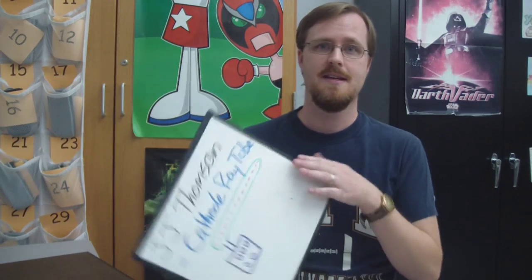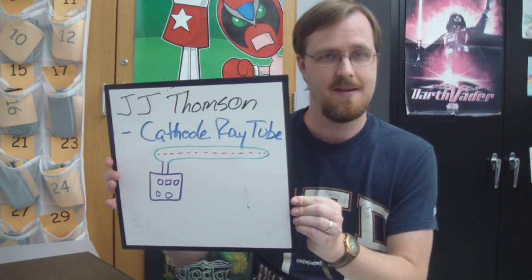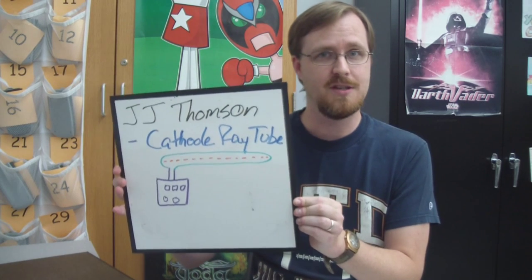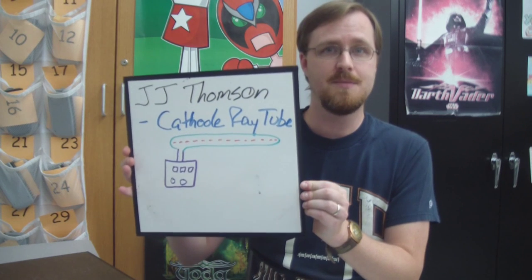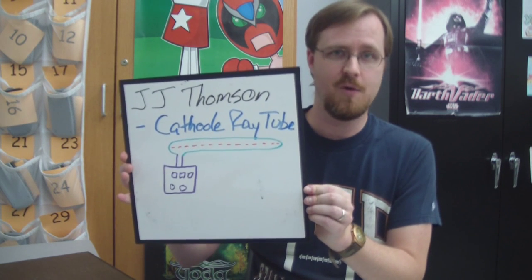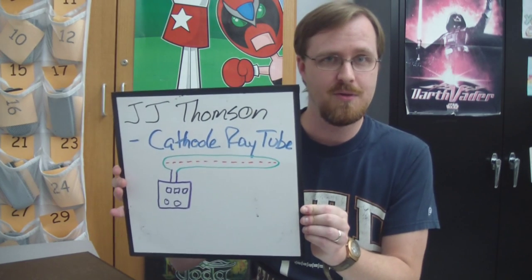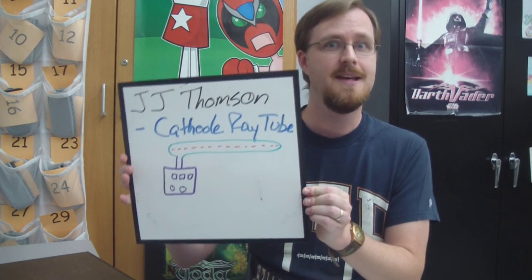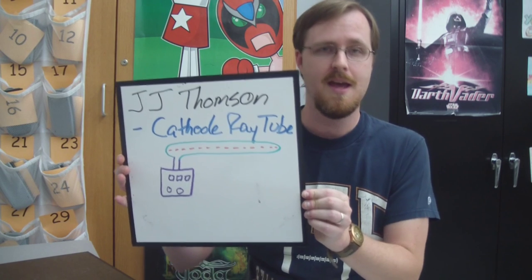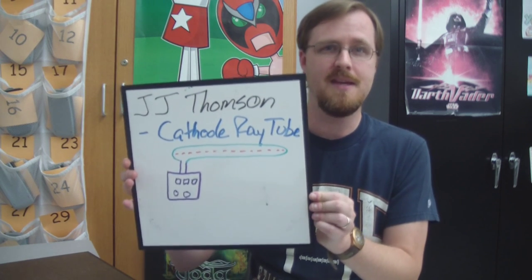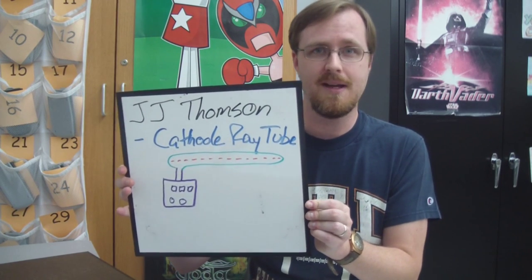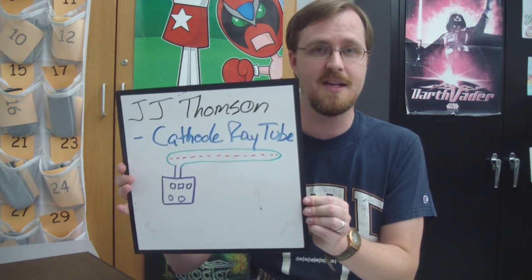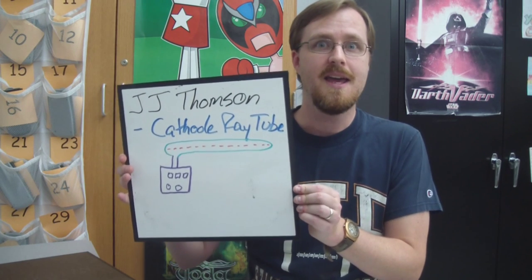The next scientist on our list is named JJ Thompson. Now JJ Thompson was actually not really trying to find anything about the atom. But he happened to be working with a piece of equipment called the cathode ray tube, which is the precursor to today's television tubes. Now in this ray tube there was simply a beam of energy, and one day Thompson happened to bring a magnet next to that beam. And guess what? It bent.